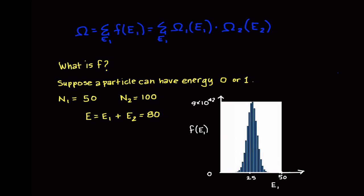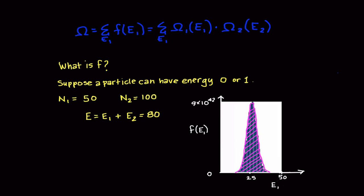This is the graph for the number of microstates with total energy E having a given E1. We get this graph by looking at all ways to assign every particle a zero or one state such that the energy in box 1 is E1 and the energy in box 2 is E minus E1. We can imagine that the sum that defines omega is the area under this graph.